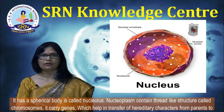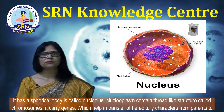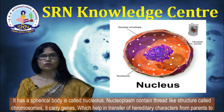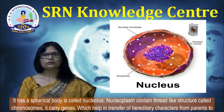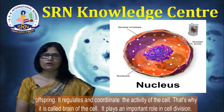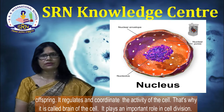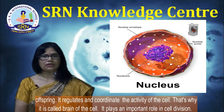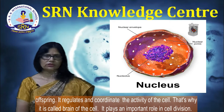The nucleus has a spherical body called the nucleolus. The nucleoplasm contains thread-like structures called chromosomes, which carry genes that help in the transfer of hereditary characters from parents to offspring. The nucleus regulates and coordinates the activity of the cell, which is why it is called the brain of the cell. It plays an important role in cell division.